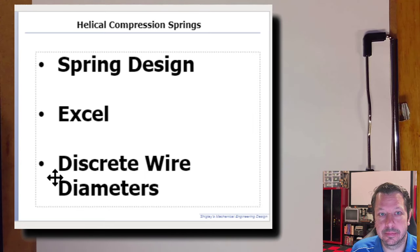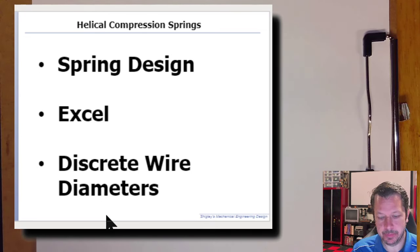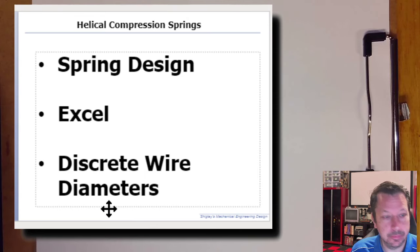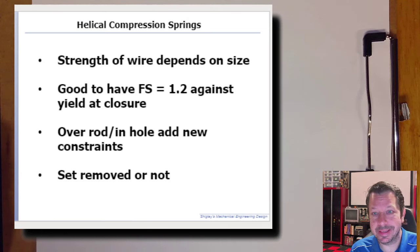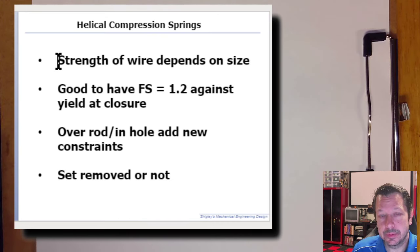We're going to use the same design as last time: a coil spring in the front suspension of an automobile with an A-arm suspension. A couple of things to be aware of — the strength of the wire depends on the size of the wire, its diameter.